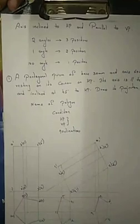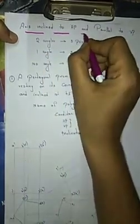We have completed the problems based on axis inclined to both the planes — meaning inclined to the vertical plane and inclined to the horizontal plane — covering initial position, middle position, and final position. Now we are solving problems based on axis inclined to HP and parallel to VP.